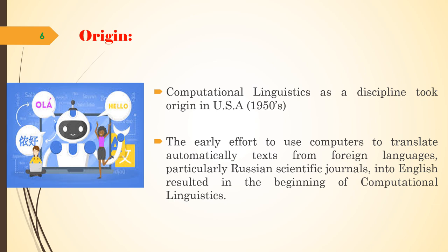Now we can see about its origin. Computational linguistics as a discipline took origin in the United States of America in 1965. The early efforts to use computers to automatically translate text from foreign languages, particularly Russian scientific documents into English, resulted in the beginning of computational linguistics.